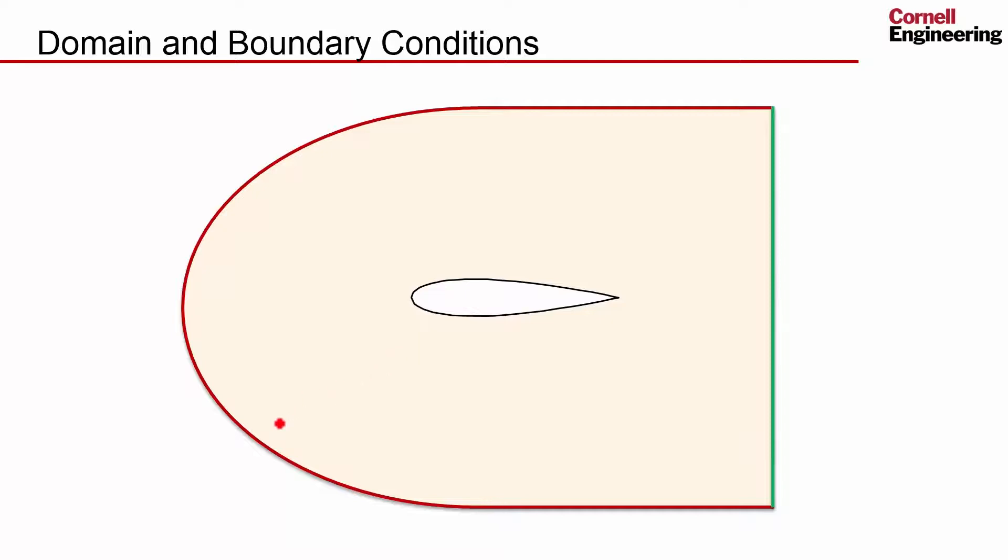Really the outer boundary should be at infinity. And so by putting it at some finite distance, we are introducing an approximation. And as part of the verification, we need to check what is the effect of moving this outer boundary out. We'll put it at about 12 and a half chord lengths away in our simulation.